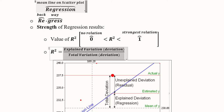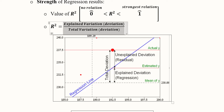Both the explained and total variation are forms of deviation. The total variation refers to total deviation in the dependent variable, and the explained variation is the portion due to the independent variables we have included. Diagrammatically, the mean of Y, the estimated Y value from regression, and the actual Y value are three key reference points.